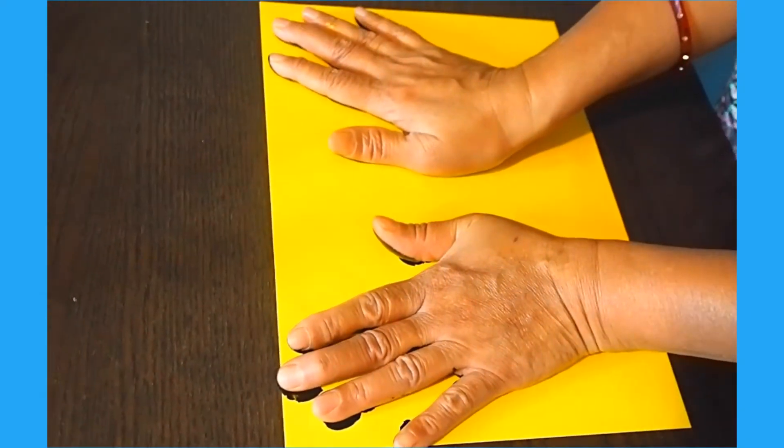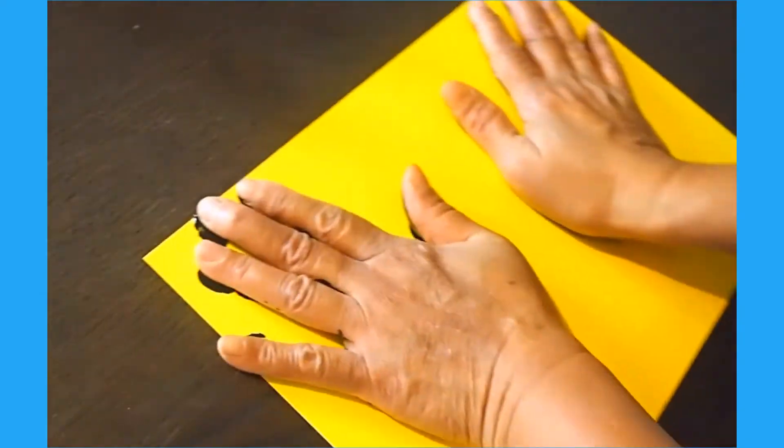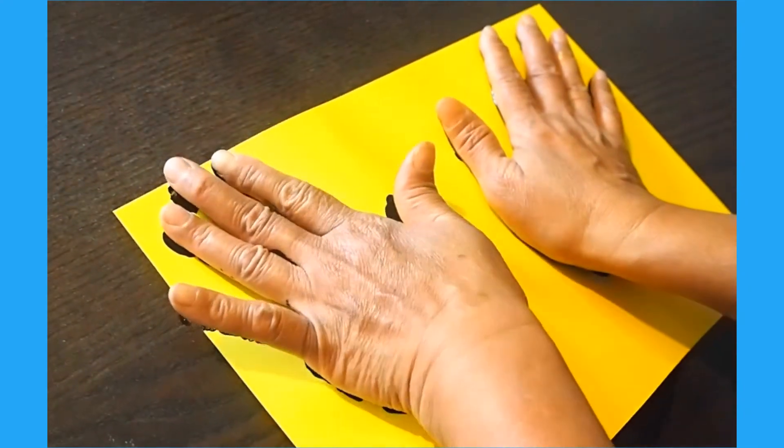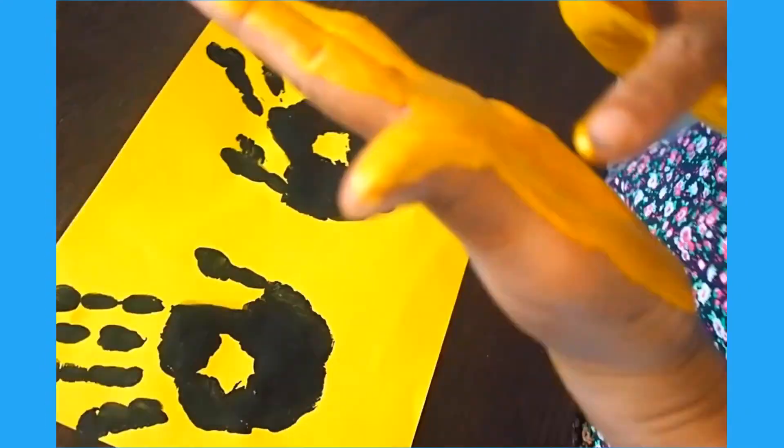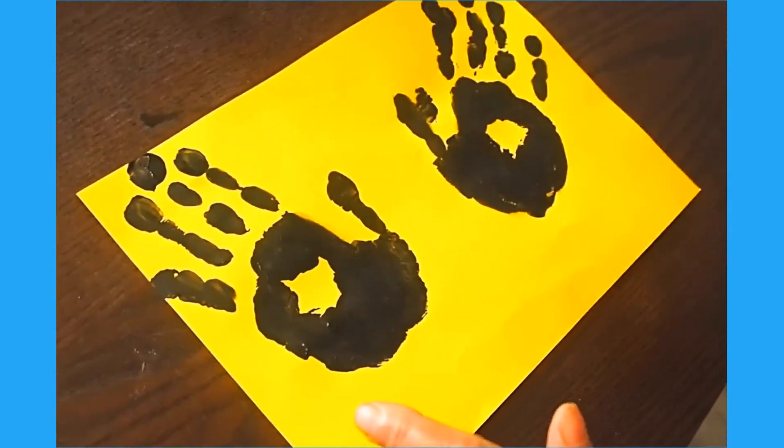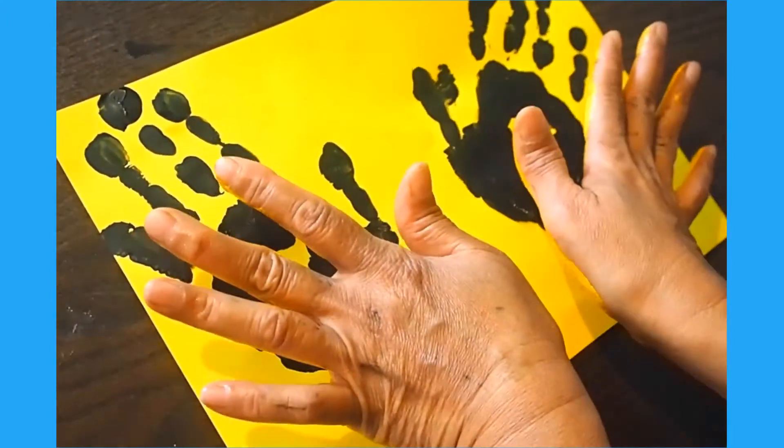You could also try making a handprint butterfly. Start by painting both hands in a chosen color and printing them onto some bright colored paper. Repeat this using another color for the next set of wings.